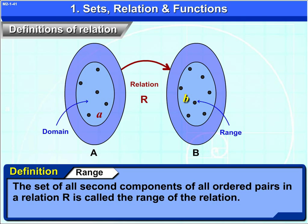The set of all the second components of the ordered pairs in a relation R is called the range of the relation. That is, range R is equal to set of B such that A, B belong to R.